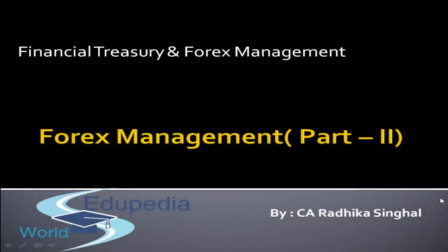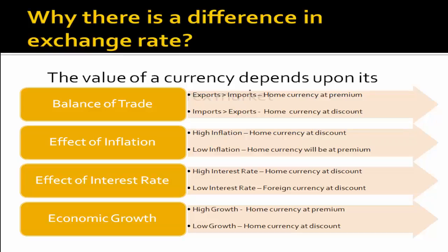Welcome to Edipedia World. In the last session we were discussing regarding the exposure risk due to fluctuations in foreign exchange. Do you ever wonder why such fluctuation occurs? Well, the prices of a commodity change due to the change in demand and supply. Likewise, the demand of a currency also fluctuates because of its demand and supply changes.